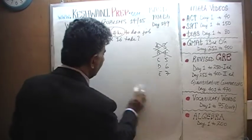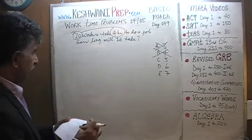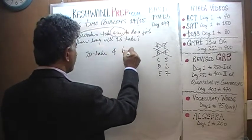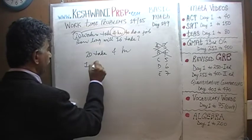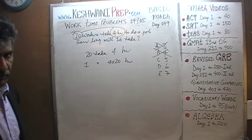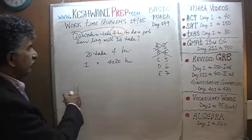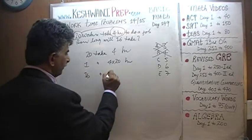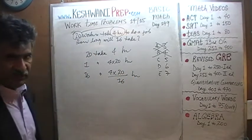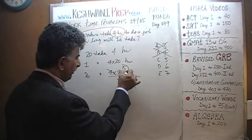Let's work it out. We are told that 20 workers take 4 hours. If only 1 worker were on the job, it would take 20 times as long — 20 times 4 hours. But we have 16 workers, so 16 workers should take 4 times 20 over 16 hours. Divide top and bottom by 4: 20 becomes 5, 16 becomes 4. Divide again by 4 and you get 5. The answer is 5 hours.